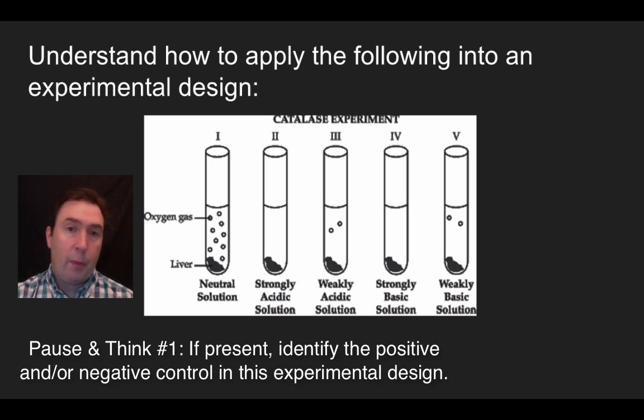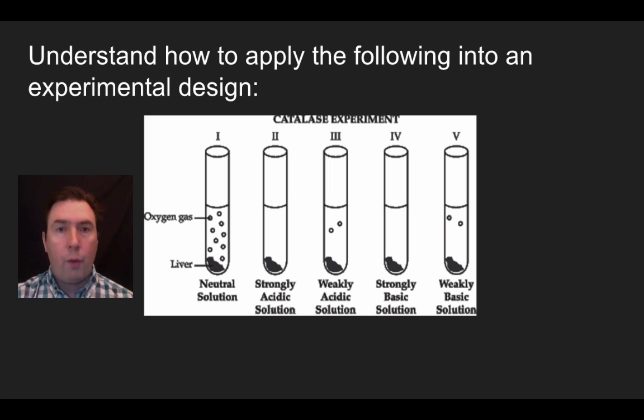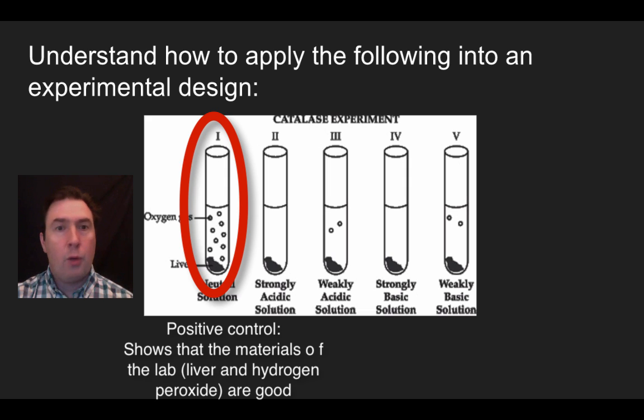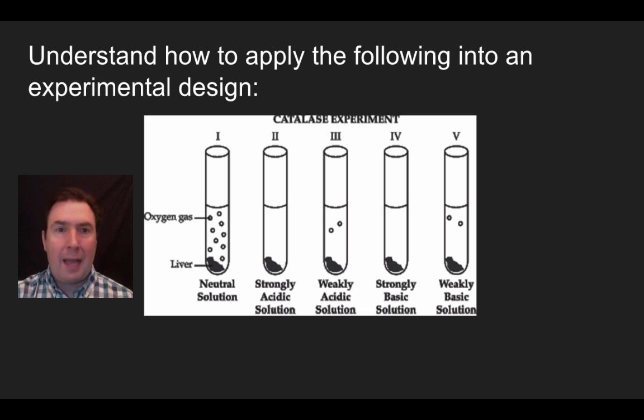So hopefully what you came up with is that there is in fact a positive control for this experiment. And that positive control is test tube one. And what test tube one is showing me normal conditions. And it's a proof that the liver and the hydrogen peroxide are actually good materials and they work in this experiment. This is serving as a positive control showing normal conditions. I don't in fact have a negative control.